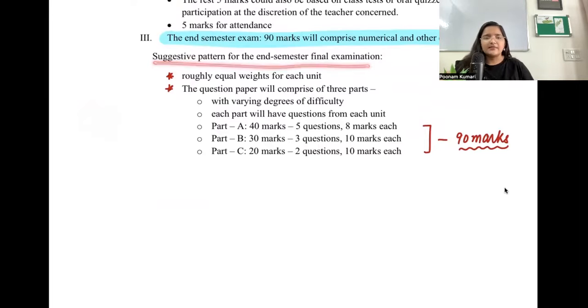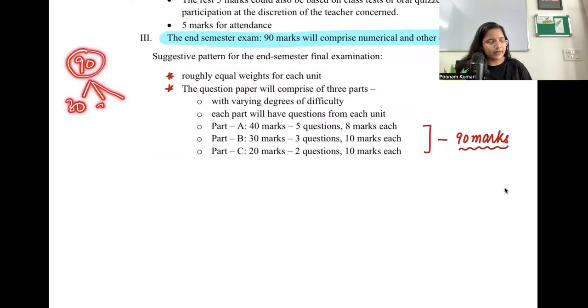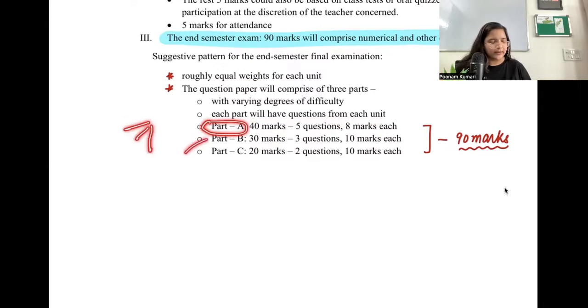Now the suggestive pattern - this is the expectation. Minor changes ho sakte hain but overall things will remain the same. First of all they've said the different units, roughly equal weightage has been given. So if you have a 90 marks paper and 3 units, then 30 marks, 30 marks, 30 marks roughly. Your paper will be divided into 3 parts: Part A, Part B, and Part C. Each has been given weightage of 40 marks, 30 marks, 20 marks.